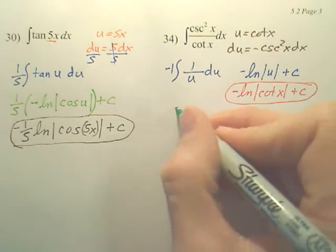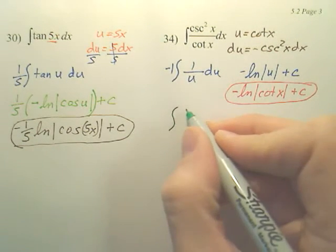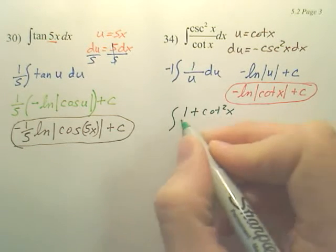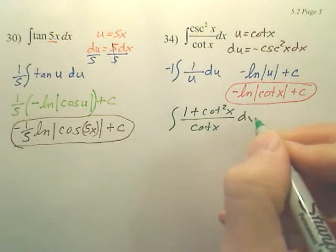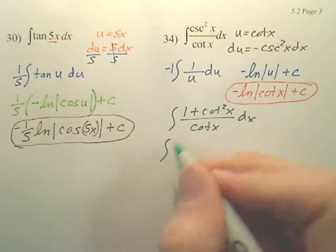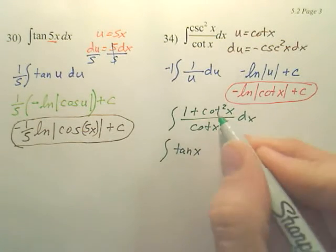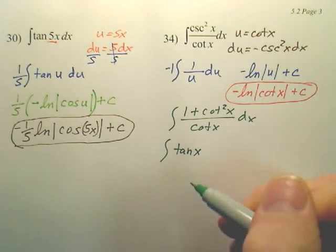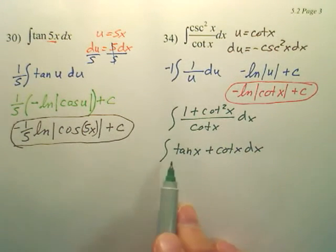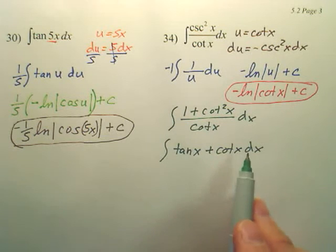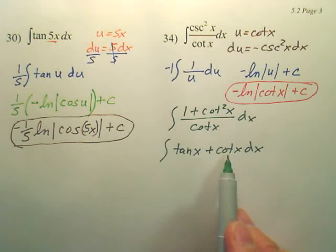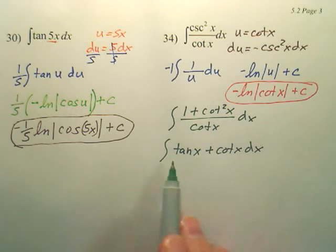You could also do it this way. I'm not going to do the whole problem. But you could do this and this becomes tangent, and this becomes cotangent. You could also do it this way, because 1 over cotangent is tangent. And this would be just cotangent. And could you integrate both of these separately?